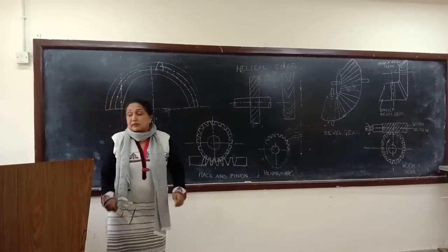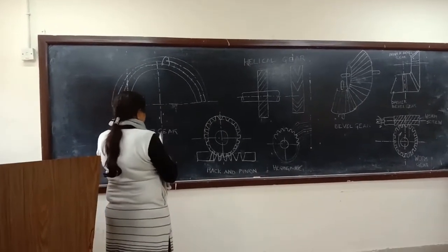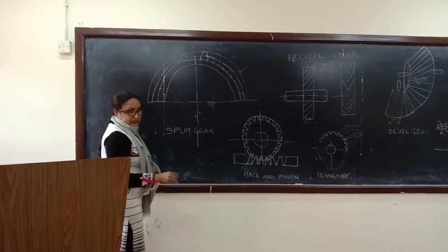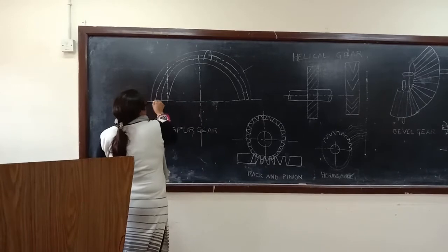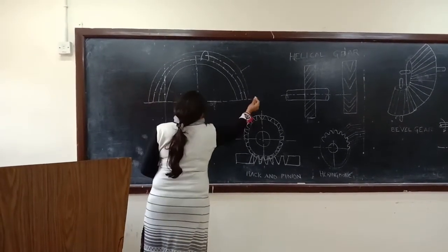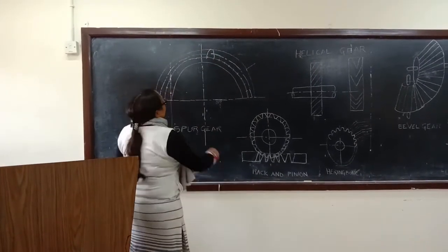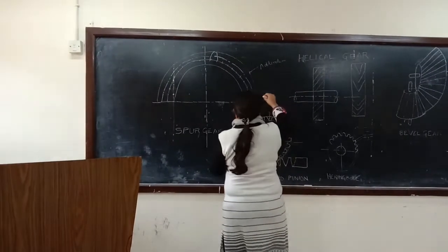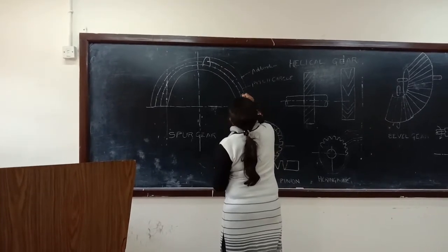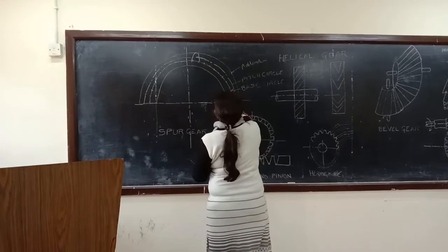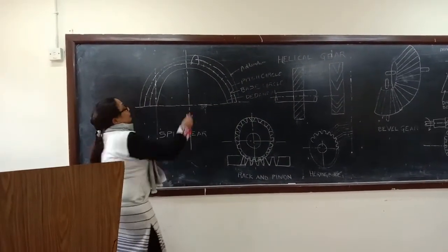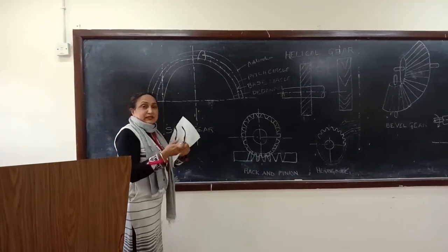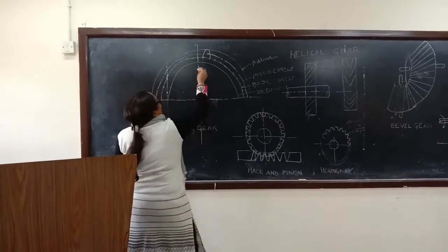First is spur gear. We'll draw the diagram for spur gear. First, draw the center axis - horizontal and vertical axis. Then draw circles. The outer circle is called the addendum. Next is the pitch circle, then the base circle, and third is the dedendum.